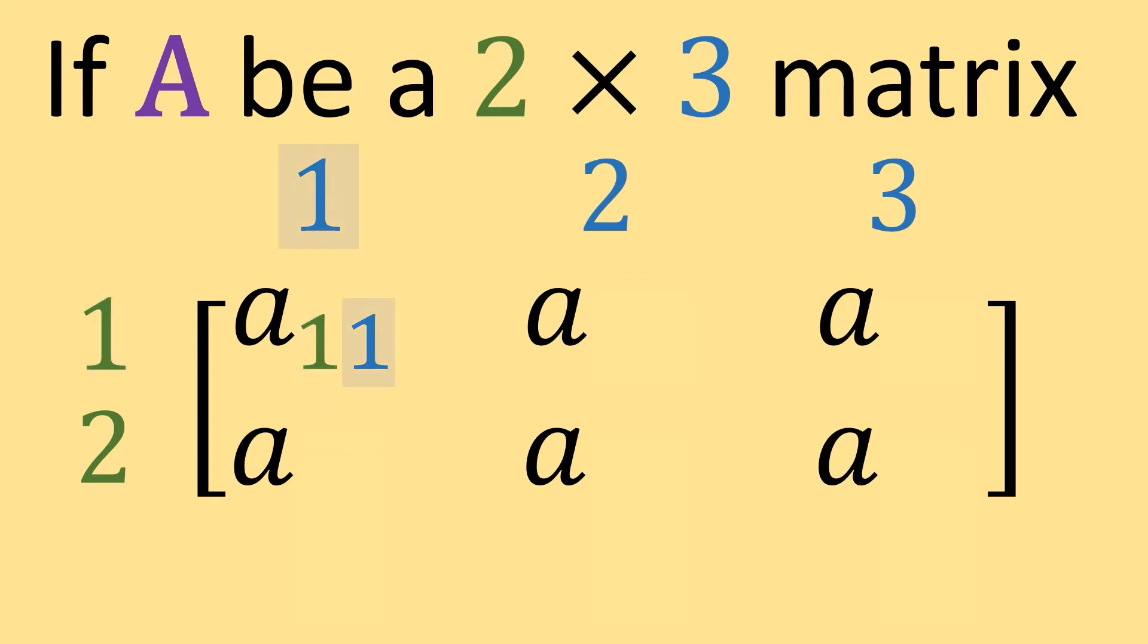And then we could fill out the rest of our indices with that same pattern. You'll notice everything in row 1 is going to have a first number of 1, and everything in row 2 is going to have a first number of 2. And then the second number of each one of these indices matches the column number.